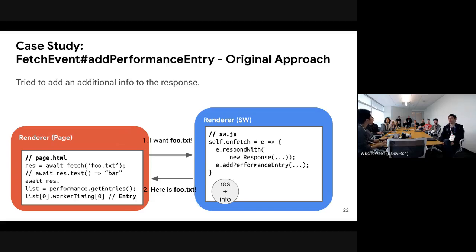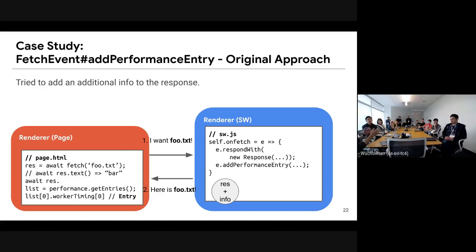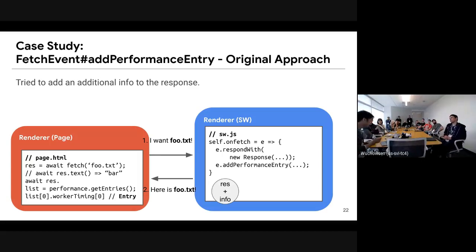The Resource Timing API gives you the timeline of a resource — like when DNS started, when the connection was established, when you got the first byte of the response, when the response ended, and so on. If you have a service worker, it should also be included in that timeline. So we need a way to add milestones: this is the API like fetchEvent.otherPerformanceEntry.